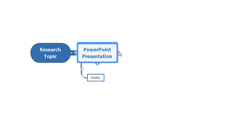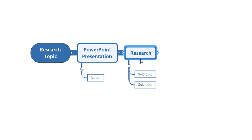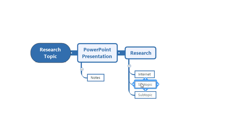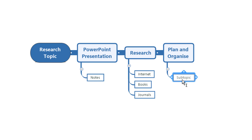I'll click the plus button again — next could be the actual research I need to do. I'll type 'Research' and tab off, then create some sub-branches off of that. I'm going to do three: the first place I'll do my research is the Internet, second is Books, and I might also use Journals. See how we're building up the map. Next I'll add 'Plan and Organize' and again you can create sub-branches off of that.